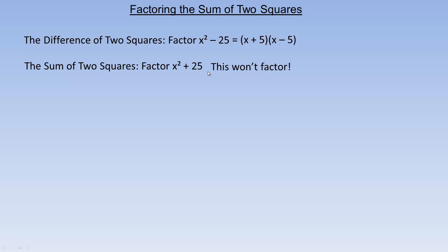If you know about imaginary numbers or complex numbers, with complex numbers you can actually factor any sum of two squares. The complex number i is equal to the square root of negative 1. If we square both sides, the square root of negative 1 squared would be negative 1, because the square just gets rid of the root. So i is the number whose square is negative 1, or i squared equals negative 1 — you can say that both ways.